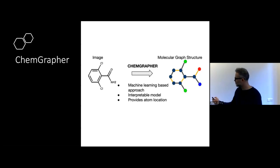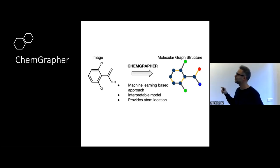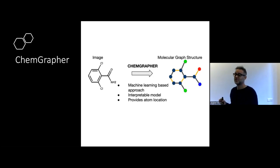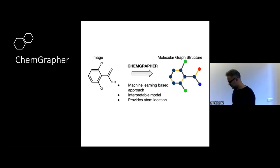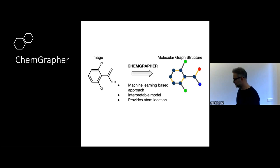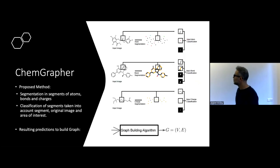ChemGrapher translates the 2D image to a graph structure. If you have a SMILES you also know the graph structure, but what we also provide is the location of every node in this graph — the coordinates of the original location in the image. So if you have an error on one of these nodes you can backtrack it and identify on which part of the image or which kind of atoms the model is still having difficulties.